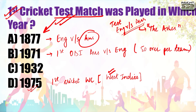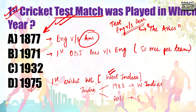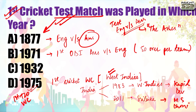India has won the World Cup a total of two times - once in 1983 and once in 2011. In 1983, West Indies lost to us, and in 2011 Sri Lanka lost. The captain of our team when we won was Kapil Dev in 1983 and MS Dhoni in 2011.